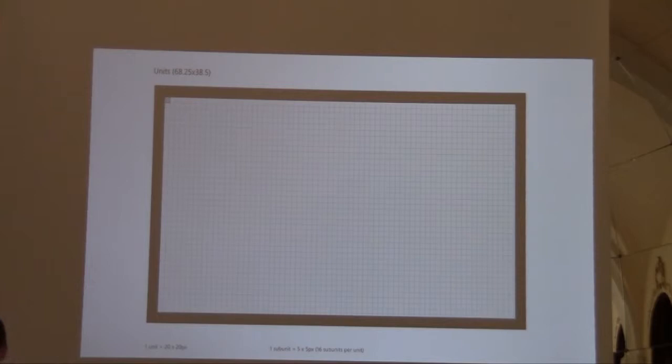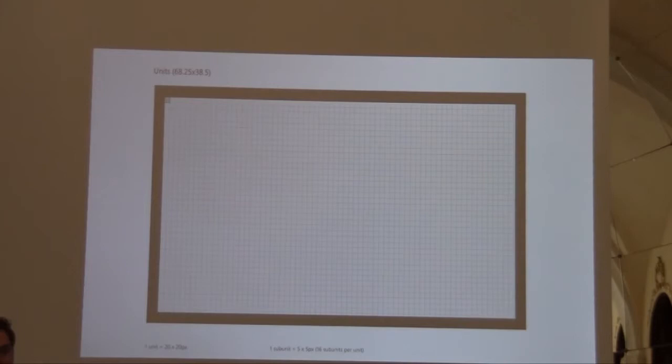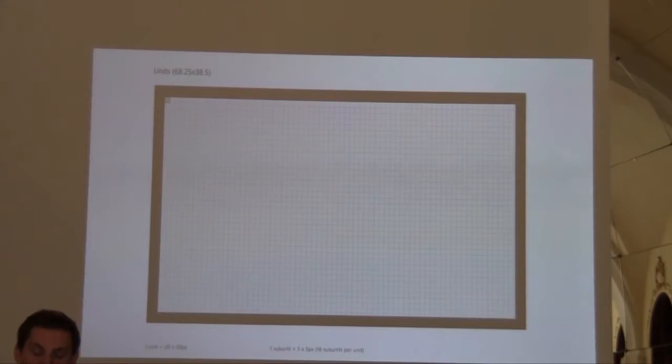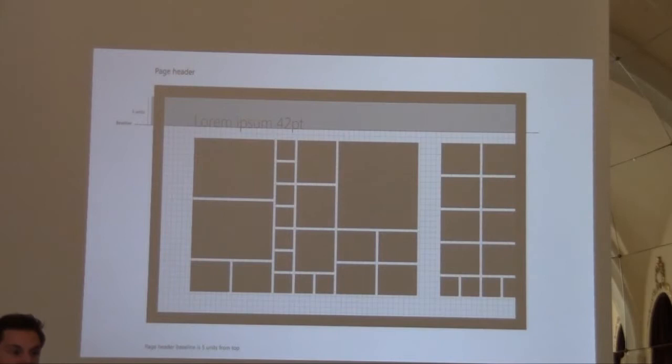Has anyone ever heard about the HTML5 grid? I think it's brilliant. What W3C came up with is that tables were probably not the best solution for layout, but the core idea of describing areas to put content in wasn't that bad. It's really helpful in designing how content flows across the page. A grid comes down to describing your whole screen area in units — in our case 20 by 20 pixels, and 5 by 5 pixels for a subunit. You can very simply align all your content on a grid.